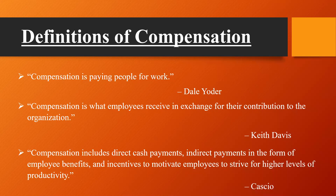According to Cascio, compensation includes direct cash payments, indirect payments in the form of employee benefits, and incentives to motivate employees to strive for a higher level of productivity. In simple terms, as Dale Yoder puts it, it is paying people for work; Keith Davis describes it as exchange for their contribution to the organization; and Cascio specifies direct and indirect payments. Every employee expects benefits and motivation from their employer through incentives, which leads to higher levels of productivity.